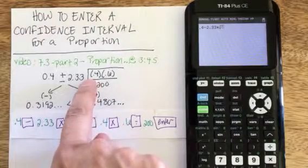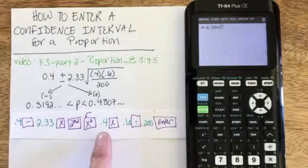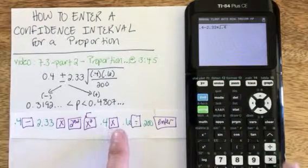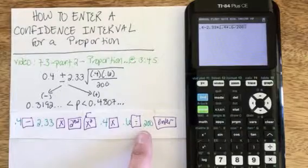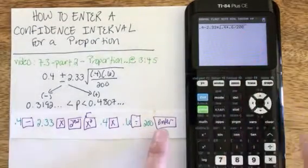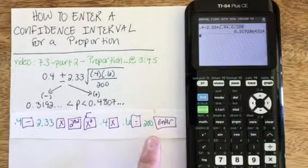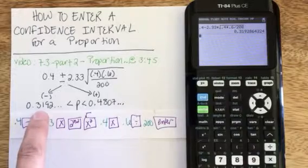Those parentheses are just for clarity regarding multiplication of decimals, but on a calculator I can just type in 0.4 times 0.6 divided by 200. I can tell that everything is inside my square root, so I just need to hit the enter button to get my lower bound value of 0.319.